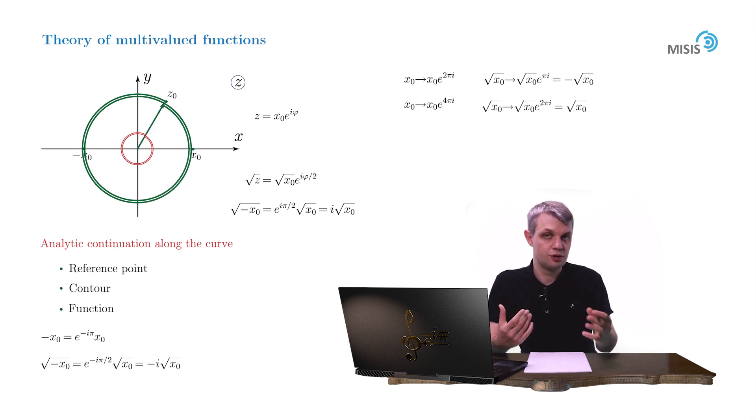So like in real calculus, in complex analysis, the square root function is also double valued. But what shall we do? How can we cure this problem?